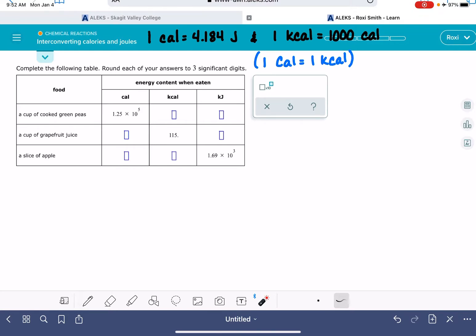So in this problem, we are given three different situations and we are given one particular energy unit, either calorie, kcal, or kilojoule, and we have to convert it into the other two units. So let's just start with the calorie to kcal conversions for the first two problems, because those are pretty straightforward.